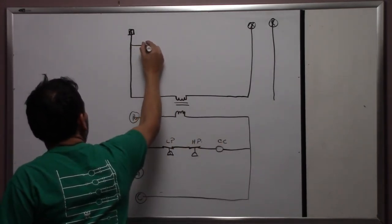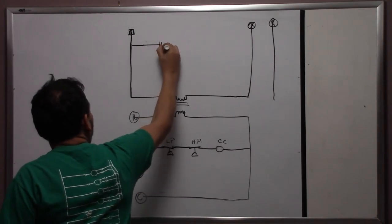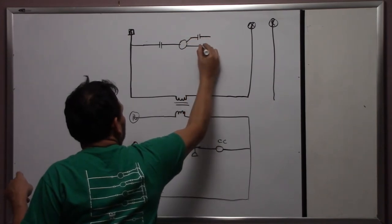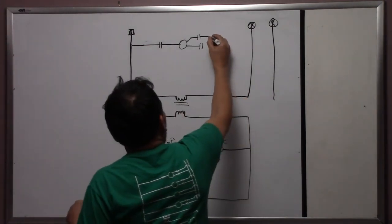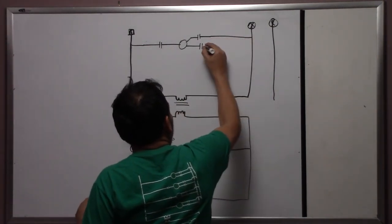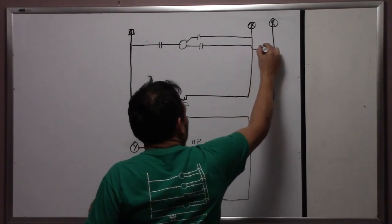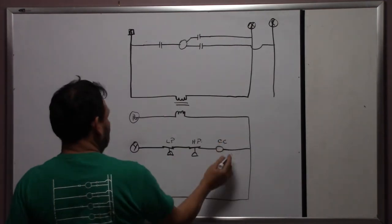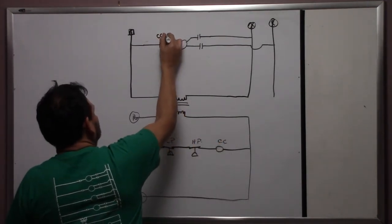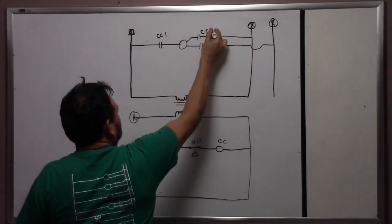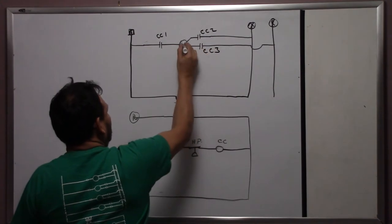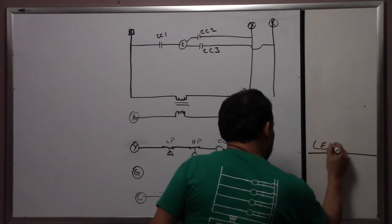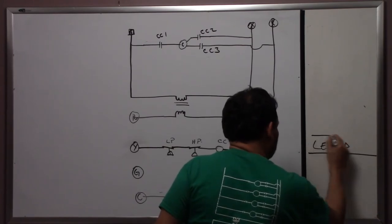Now we're going to label this. This is your compressor, and this is your three-phase line. So CC1, then you have CC2, CC3, and this will be your compressor. If you remember, we have the legend.